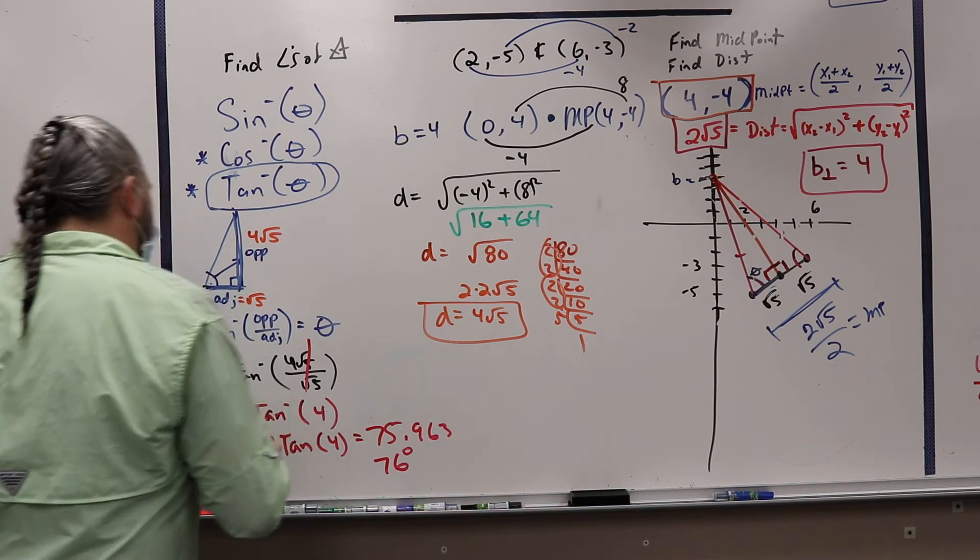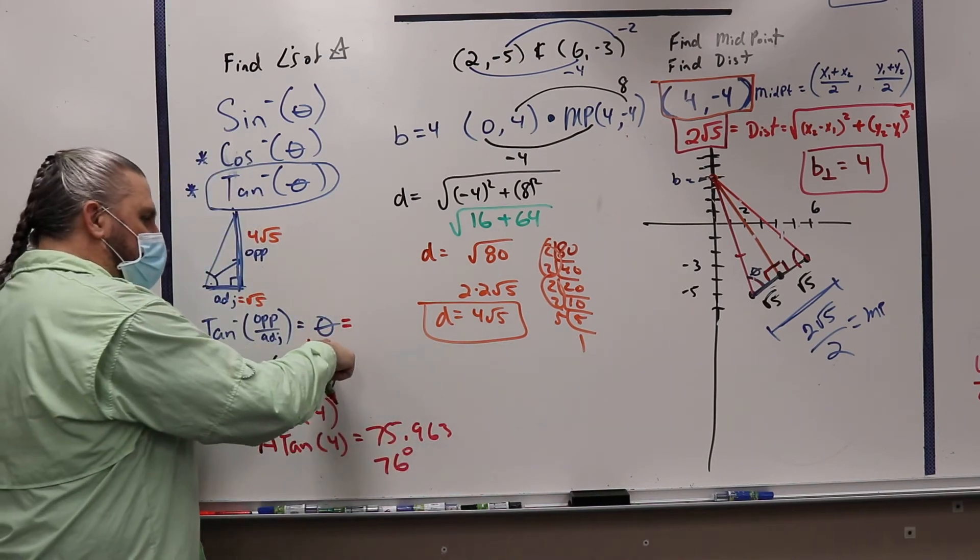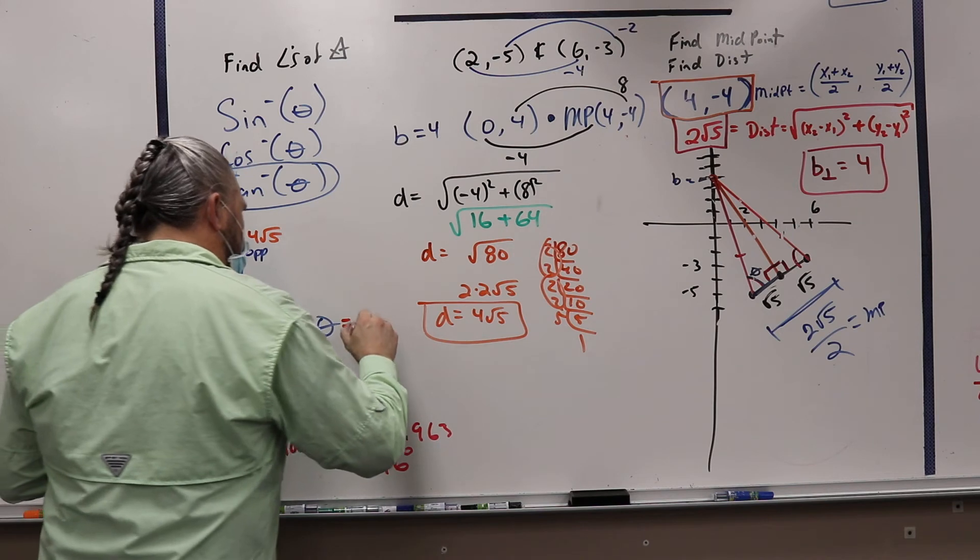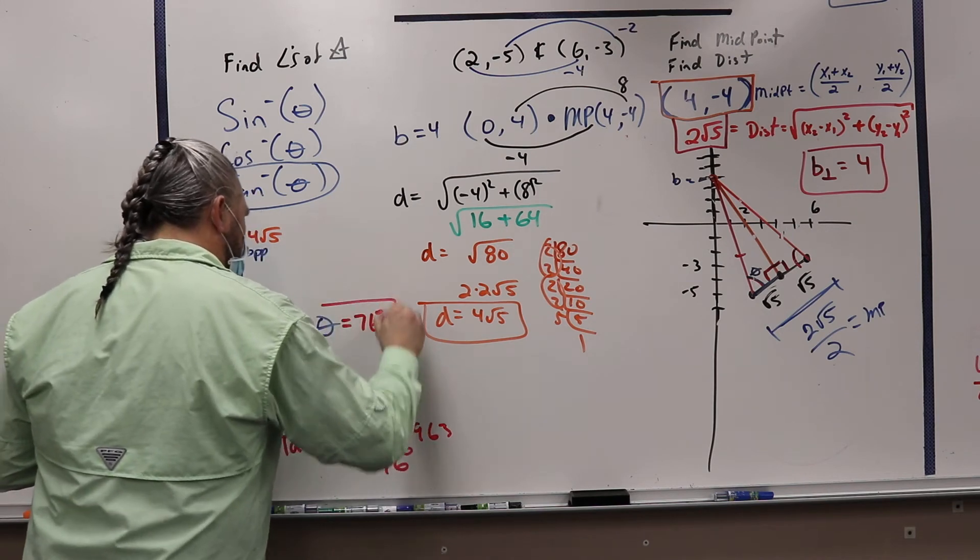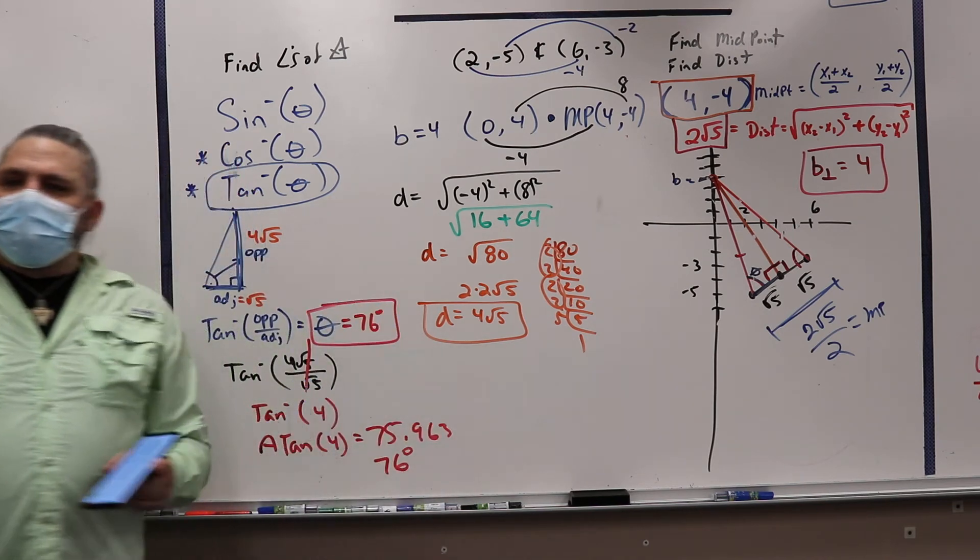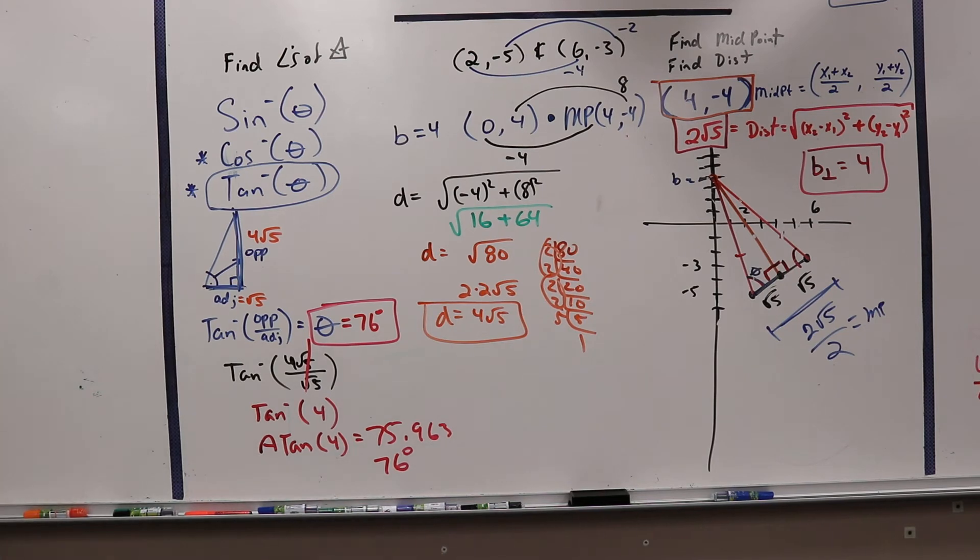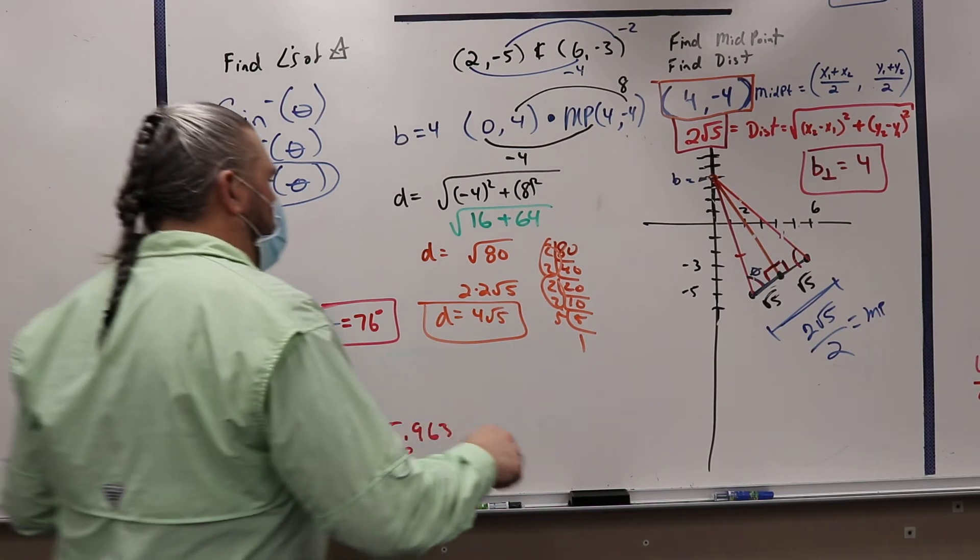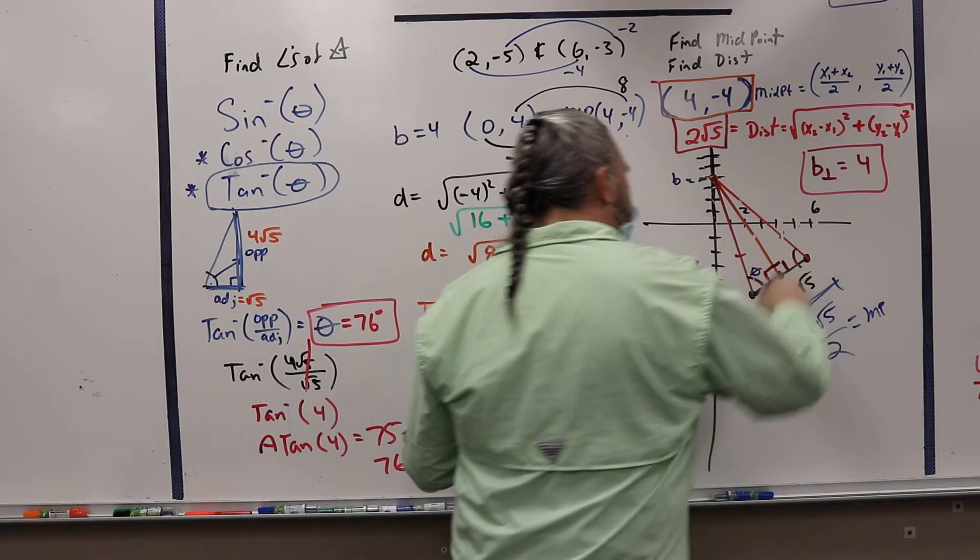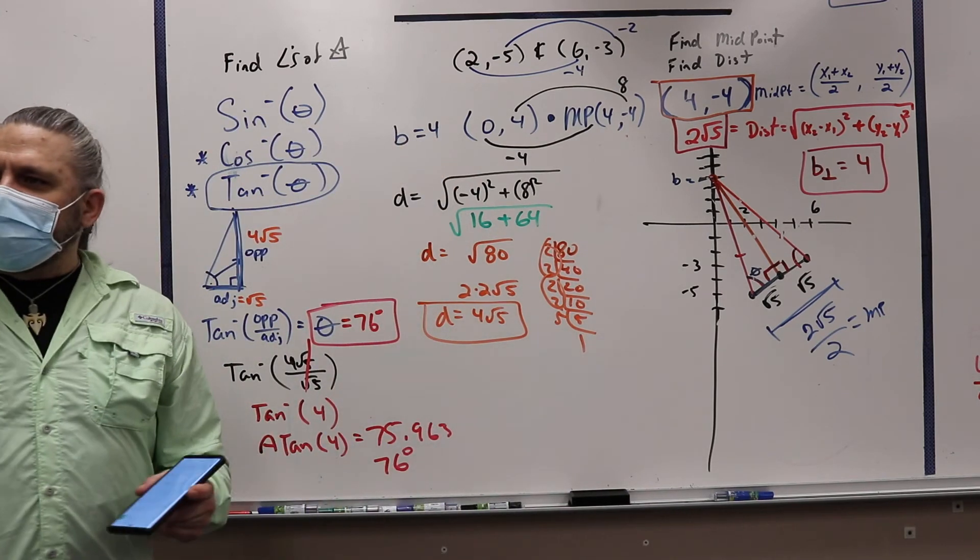Okay. So the theta that we need is 76 degrees. So now we've got to go back to geometry. And remember, if this is an isosceles triangle, then we're going to have two thetas, right?